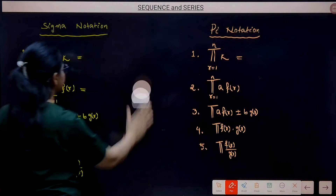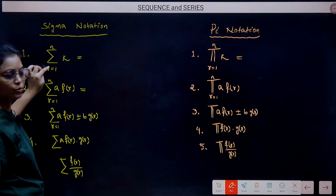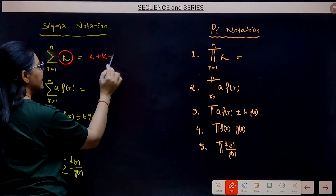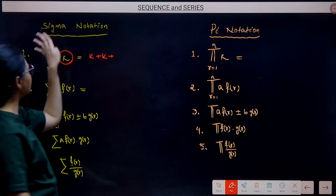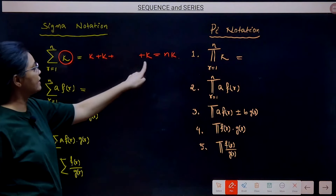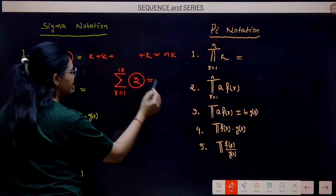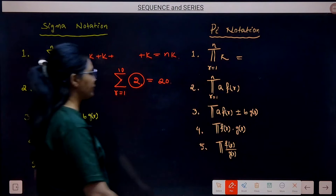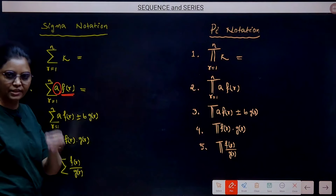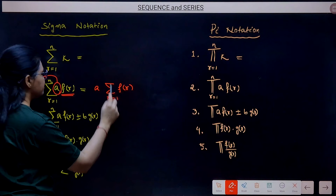Some properties of sigma that you will use directly: First, if there is a constant K inside the sigma (R has no presence), then as R varies from 1 to N, K is added N times, giving N·K. For example, if this is 2 and R varies from 1 to 10, then 2 is added 10 times, so the answer is 20. Second, if a constant is multiplied with an expression involving R, you can move the constant outside the sigma.